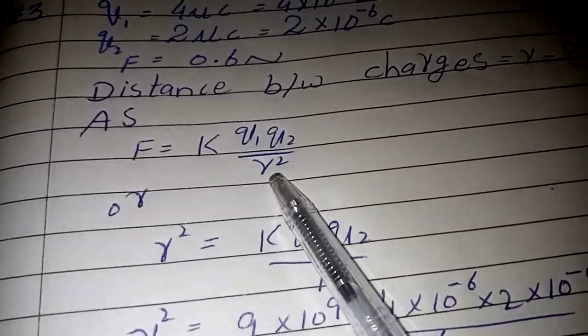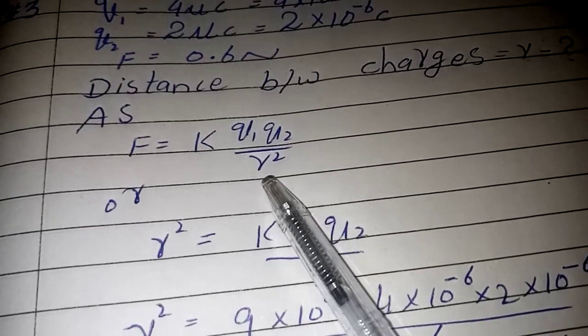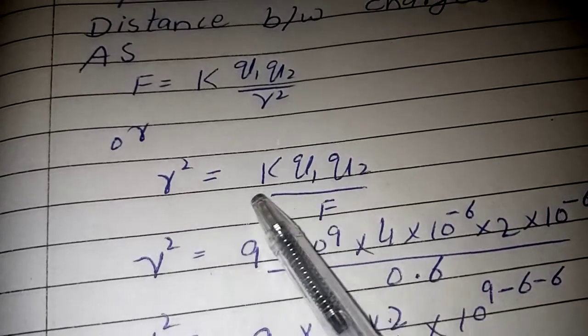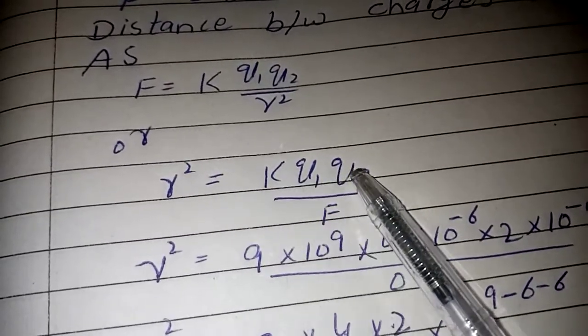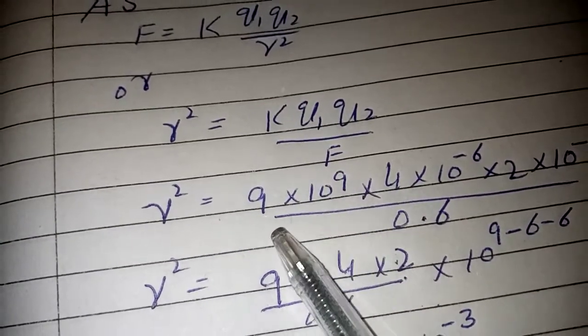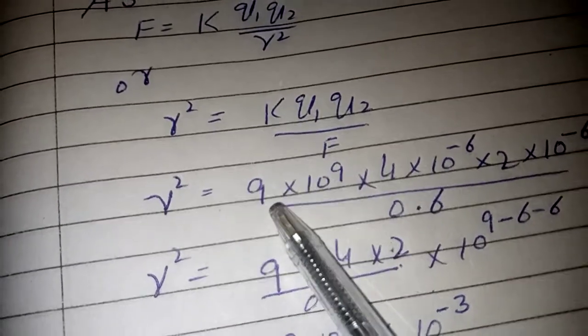Using Coulomb's law F equals K Q₁Q₂ over r squared, we need to determine r. Rearranging: r squared equals K Q₁Q₂ upon F. The constant K has value 9 times 10 to the power 9.